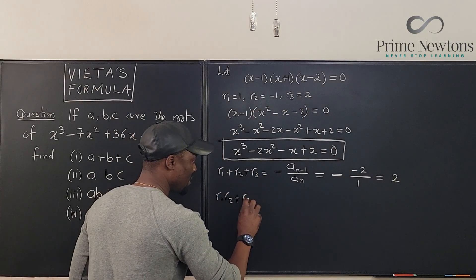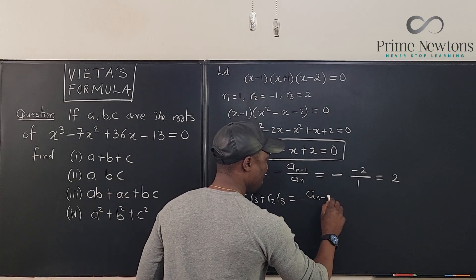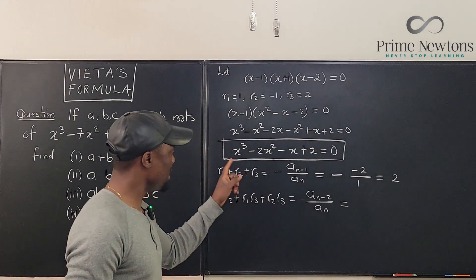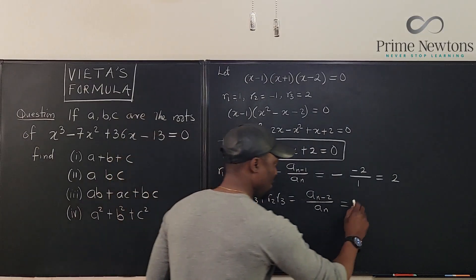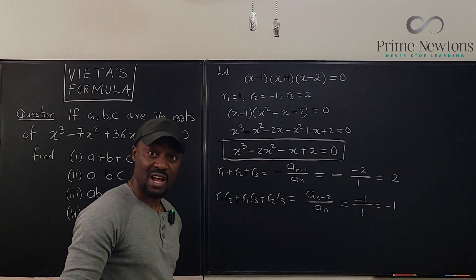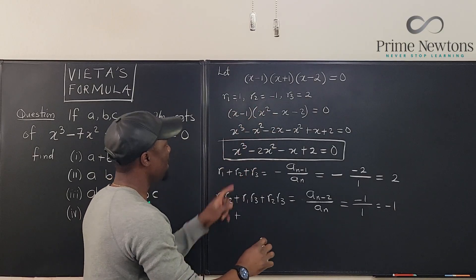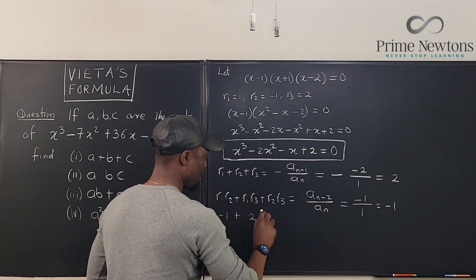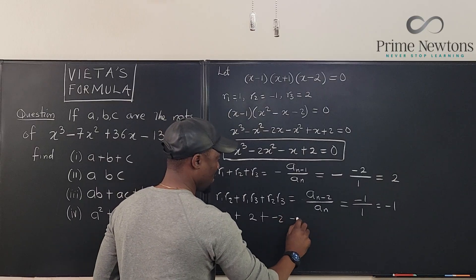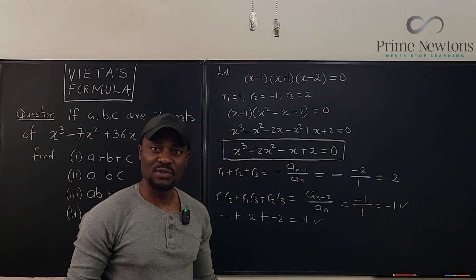r1 r2 plus r1 r3 plus r2 r3 equals a sub n minus 2 over a sub n. a sub n minus 2 over a sub n would be, this is our a sub n minus 2, minus 1. So it's going to be minus 1 over 1, which is minus 1. We just have to quickly verify. What is r1 times r2? This times this is going to be minus 1. What is r1 times r3? That's going to be 2. And what is r2 times r3? It's going to be minus 2. Okay, so this gives us minus 1, which is correct. So as you can see, the few ones we've done are correct.